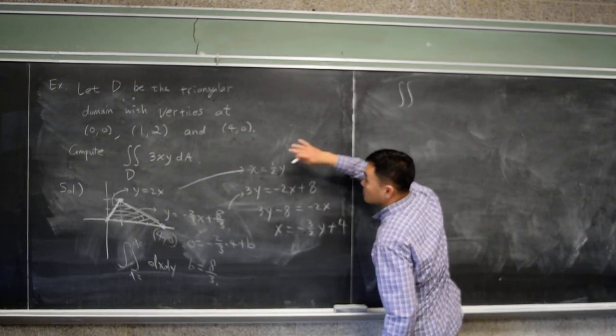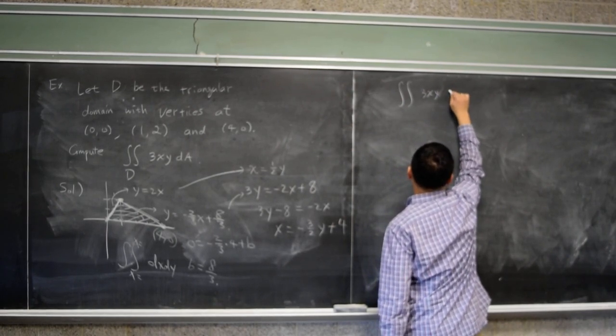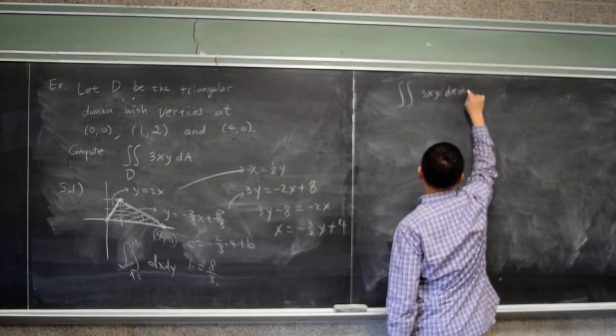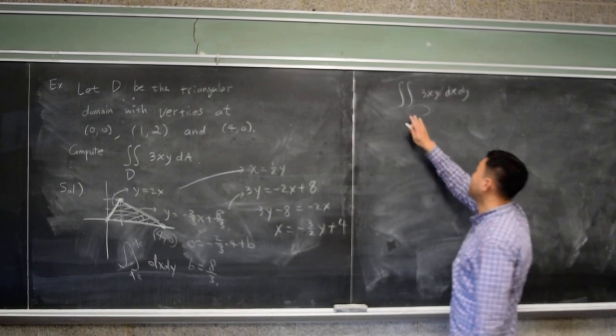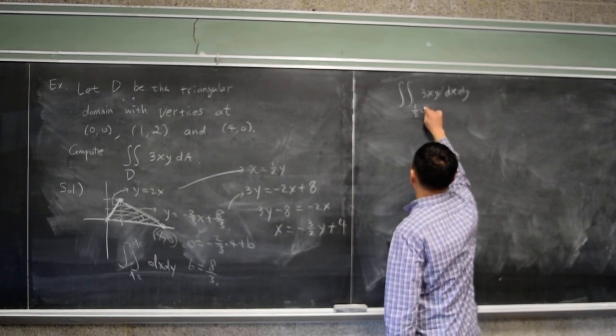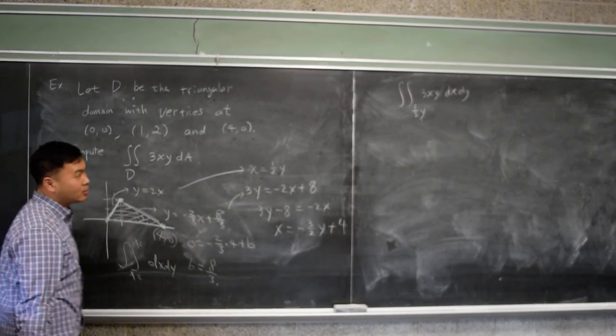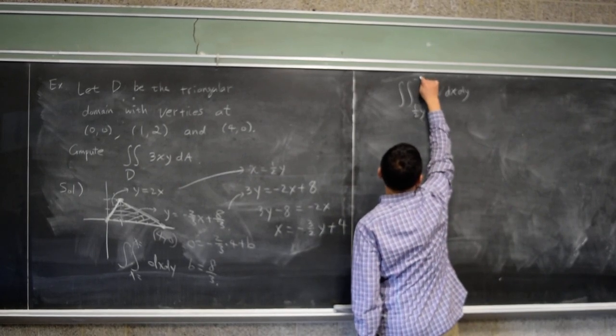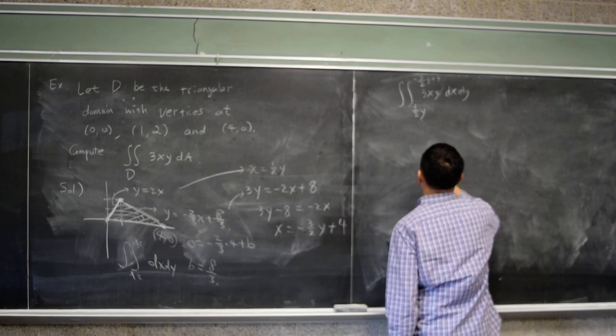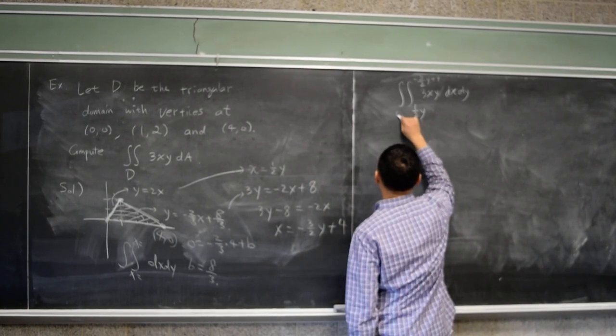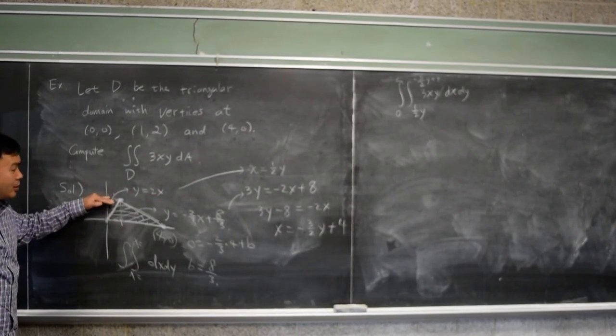We're almost done. Therefore, if I write this integral explicitly, we're trying to integrate 3xy, and we pick dx dy. What should I put here? One half y, because we start from this curve and the equation for this curve is one half y. What do I put on the top? Negative 3/2 y plus 4. And then for y value from where to where? Zero to 2, because the lowest value for y is zero and the high value is 2.